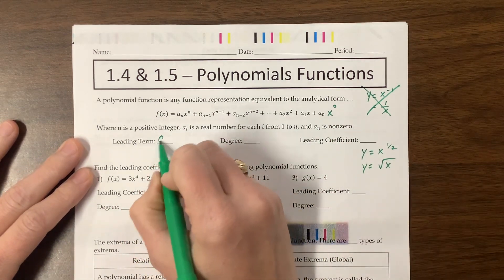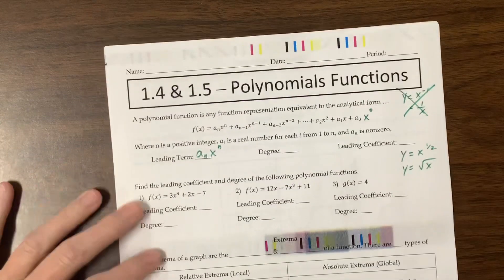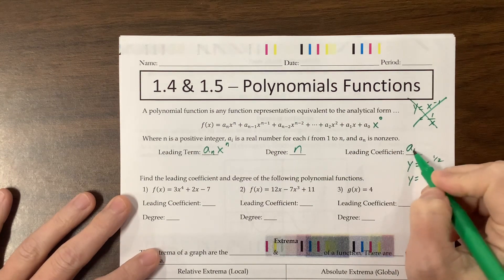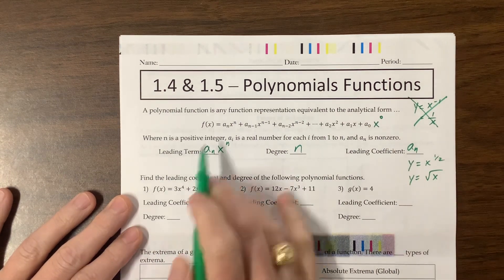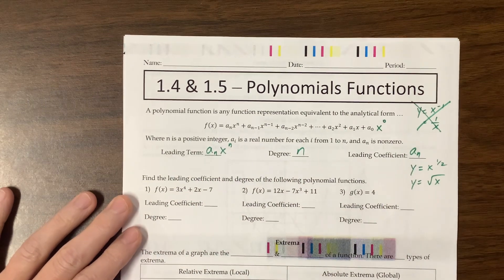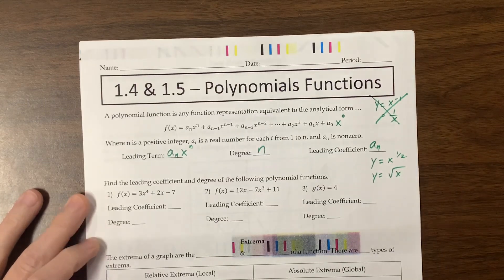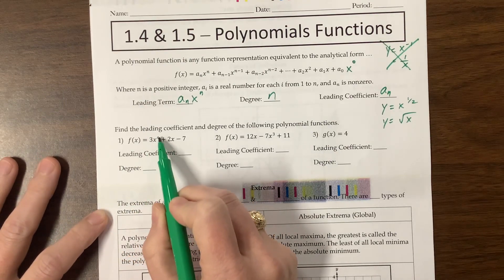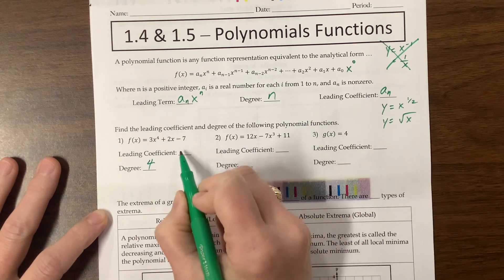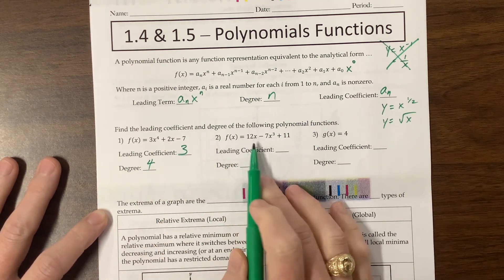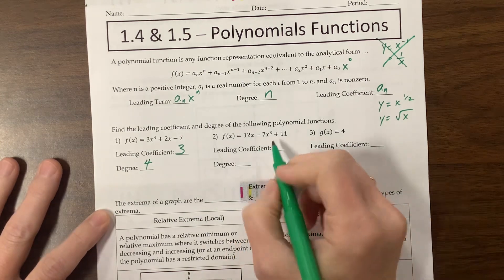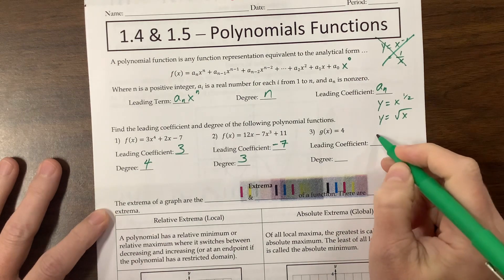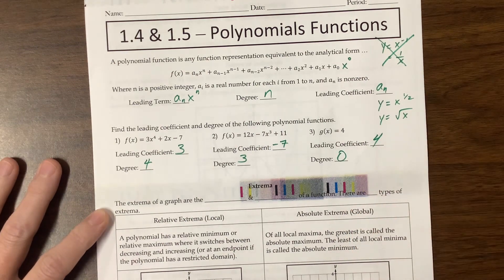So the leading term is this a sub n to the x to the n. The degree is n. The leading coefficient is that a sub n. So basically, they're just kind of labeling them that way. It's just the math notation. Let's jump into a little bit more interesting. The leading coefficient is, we look for the largest exponent. The degree of that largest exponent is four. The leading coefficient was three. Here on this one, we switched up the order just to make sure you were paying attention. Leading coefficient is a negative seven. The degree was three. Leading coefficient is four. The degree would be zero.